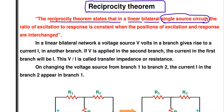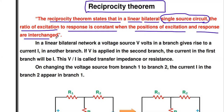In a single-source circuit, the ratio of excitation to response is constant when the position of excitation and response are interchanged — this is said to be reciprocity. Excitation means input applied to that circuit, and response means output. So the ratio of input divided by output is always constant when the positions of input and response are interchanged.